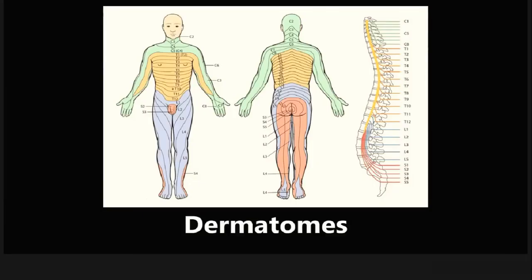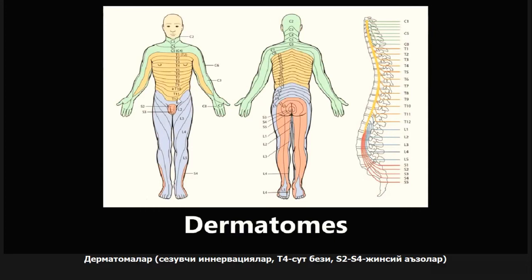This last image is an example of the dermatomes of the body. You won't see a picture like this on the exam, but they do ask a lot of sensory and innervation questions, especially in the arm and hand. T4 is the nipple line. L1 through L5 dermatomes in the leg are lower yield than the arm. The innervation of the genitals is S2 to S4, seen on the front, back, and anus as well.